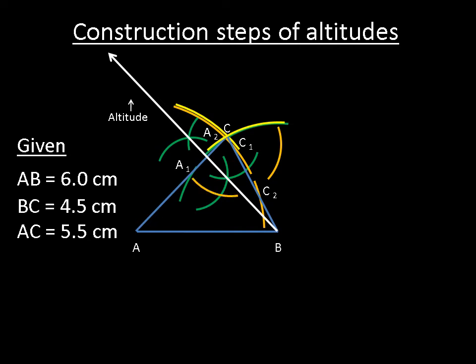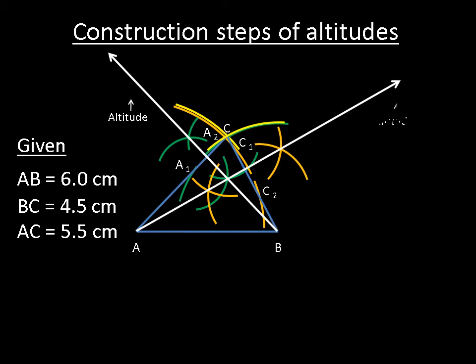Then without changing the radius of compass, put the pointer of compass at point C2 and draw arcs above and below the line BC intersecting the previous arcs. Then with the help of a ruler, draw a straight line passing through the intersecting points of these arcs connecting to point A. This is an altitude towards the line BC.